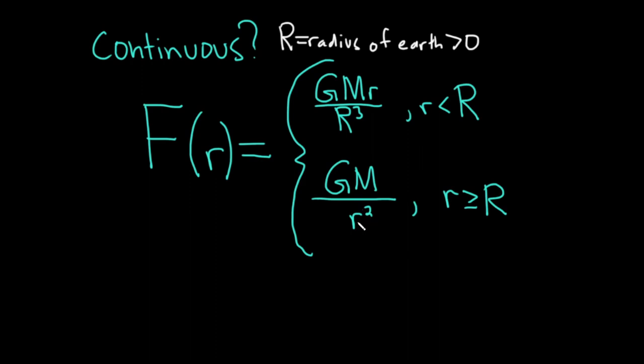Here on the bottom, little r appears down here, which could be bad because you might say, oh, it might be zero. But little r is greater than or equal to big R. But big R is the radius of the Earth. So that means that little r is positive down here. Okay, so this is positive. So little r is positive. So we're never going to divide by zero. So just from inspection, this piece here and this piece here are continuous.